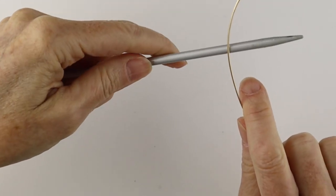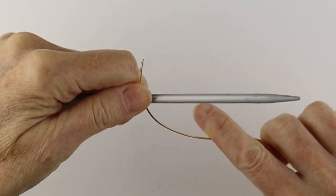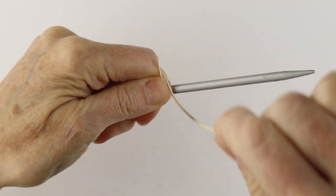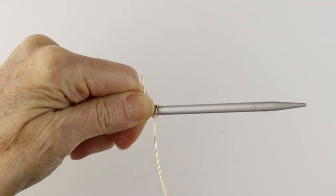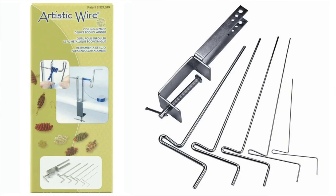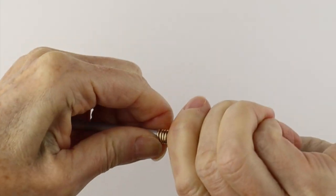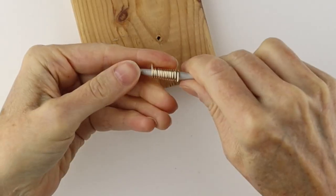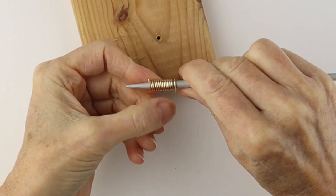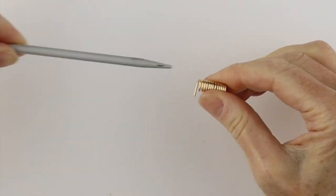Now if you want to do even more at once, you can take a knitting needle or another round form and we're just going to wind it around. You can also use the artistic wire coiling gizmo. We're just going to turn this one around until you use up all the wire. I've finished it so these wires go out on either side. Then we're going to remove it.